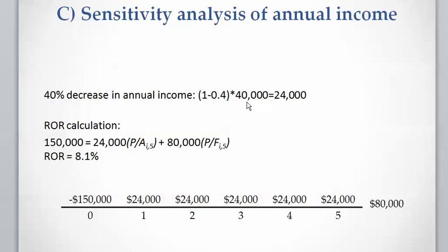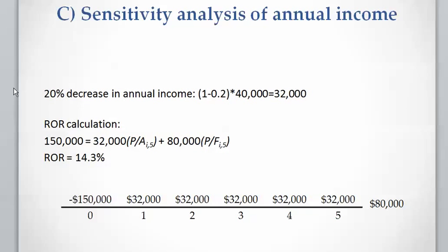Now sensitivity analysis for annual income. The initial annual income was $40,000. A 40% decrease means 1 minus 40% multiplied by $40,000, giving an annual income of $24,000. The rate of return for this case is 8.1%. A 20% decrease gives 1 minus 20% multiplied by $40,000, which is $32,000 annual income, and the rate of return is 14.3%.